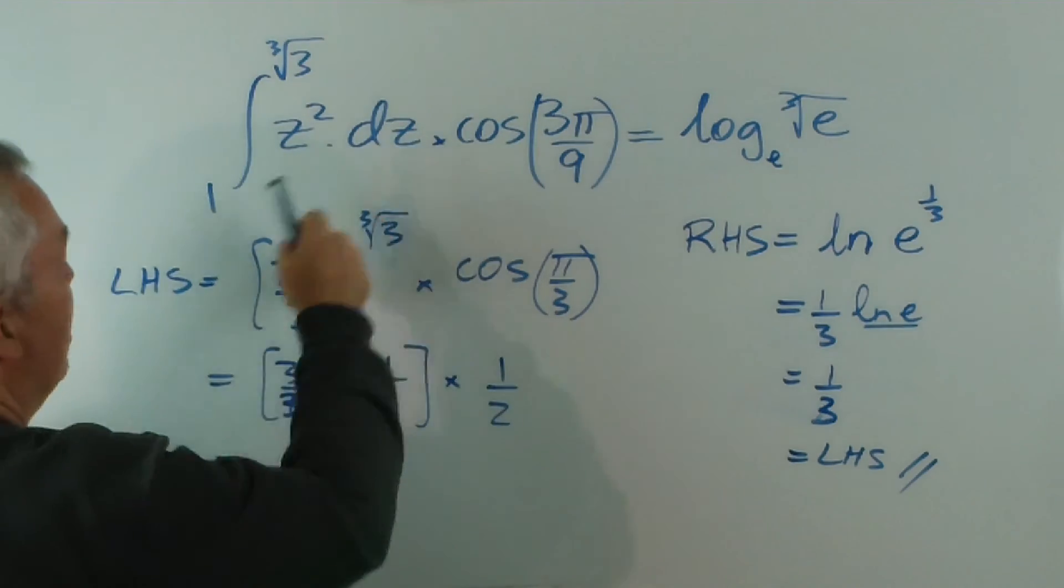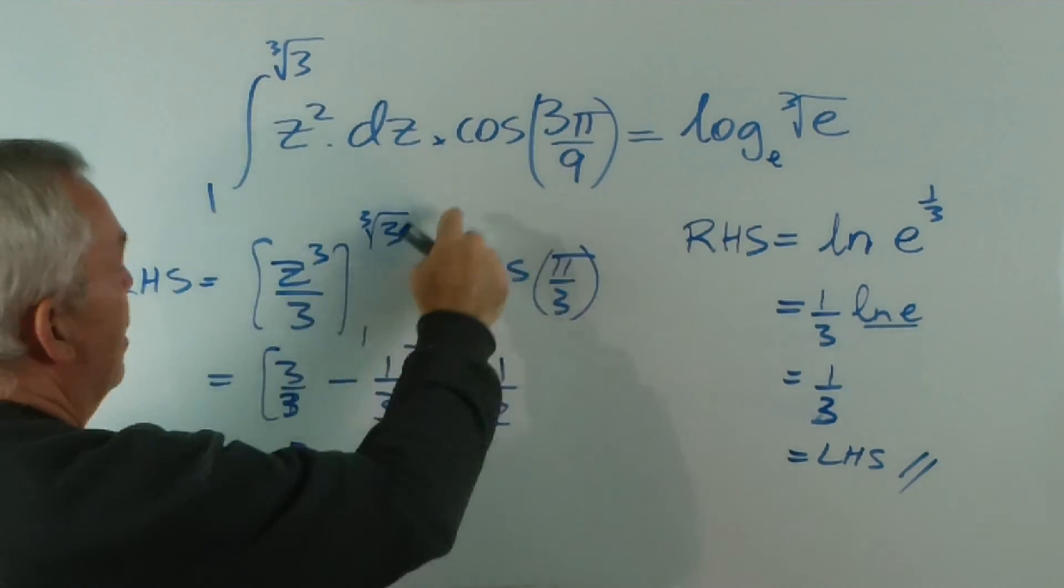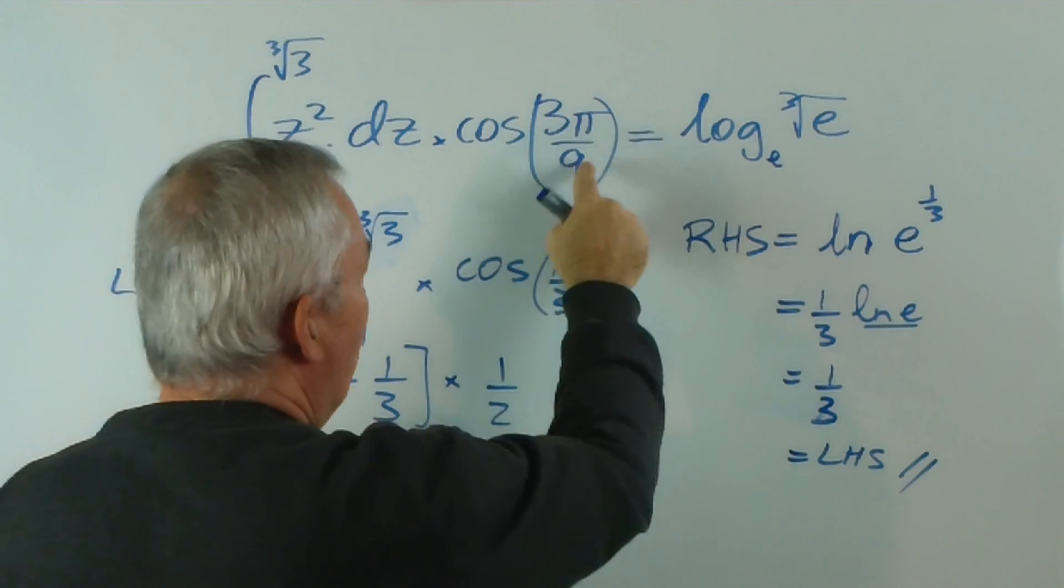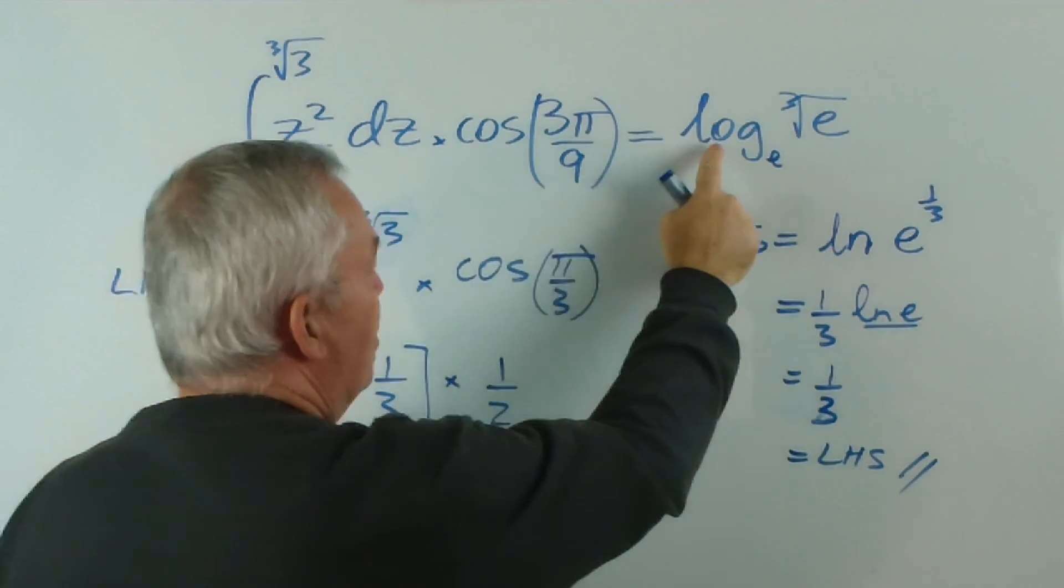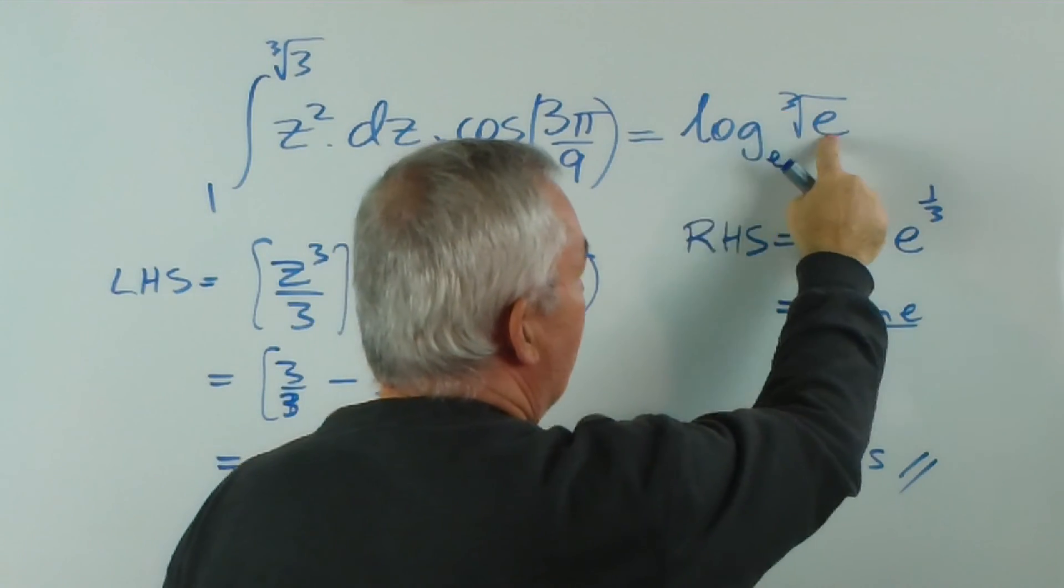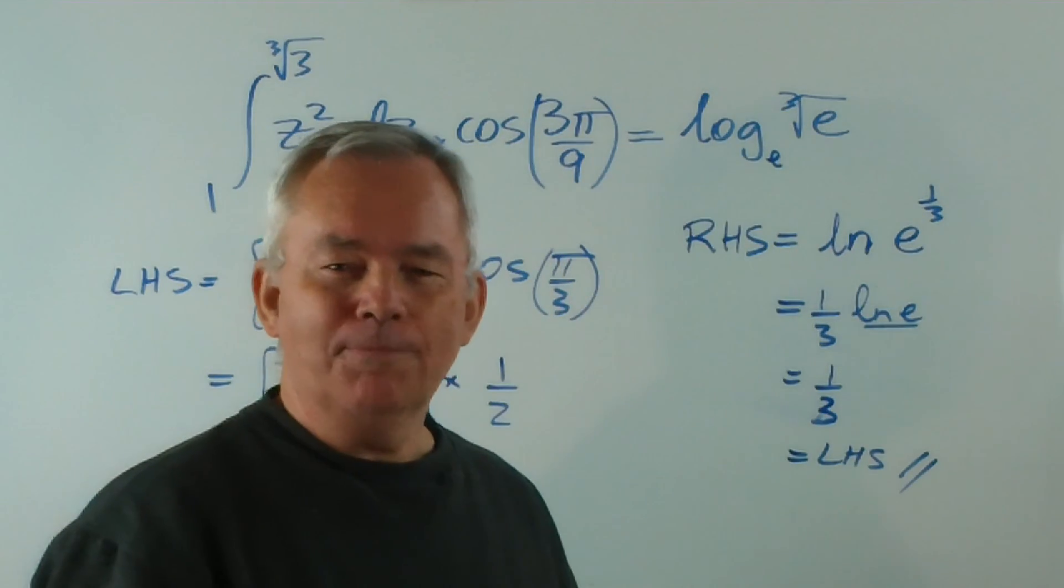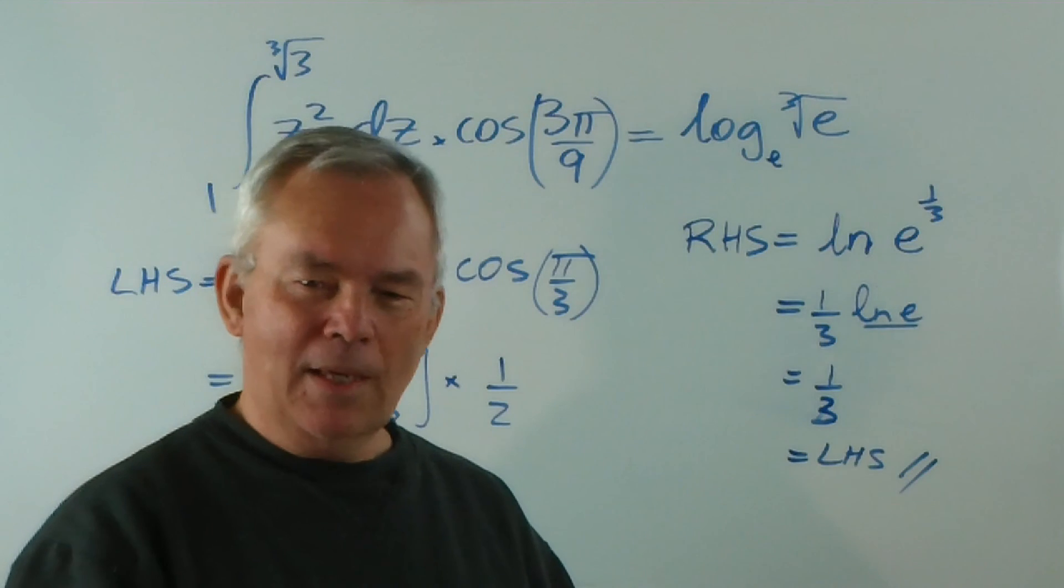So there you go... the integral of z squared dz from 1 to the cube root of 3 times the cosine of 3π over 9 equals the logarithm of the cube root of e. Beautiful. I hope you enjoyed it, and thank you for watching.